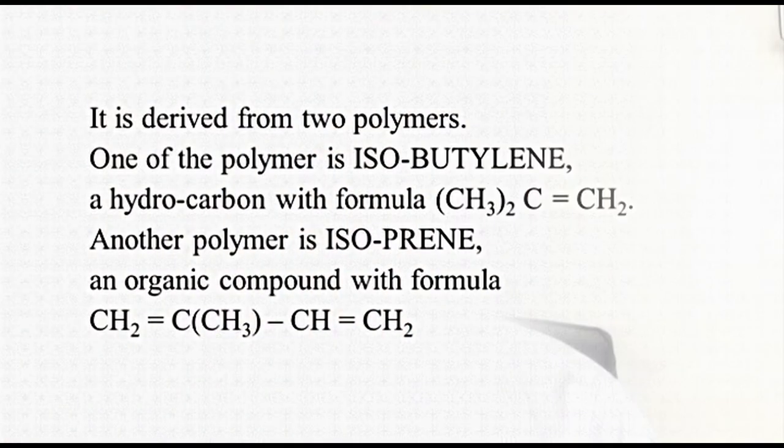During Second World War, it was essential to avoid shortage of natural rubber to make tires and tubes for war vehicles. This brought forward the development of synthetic rubber. Most promising among these is butyl rubber IIR. It was first introduced in 1942 and is still being used to make tubes.